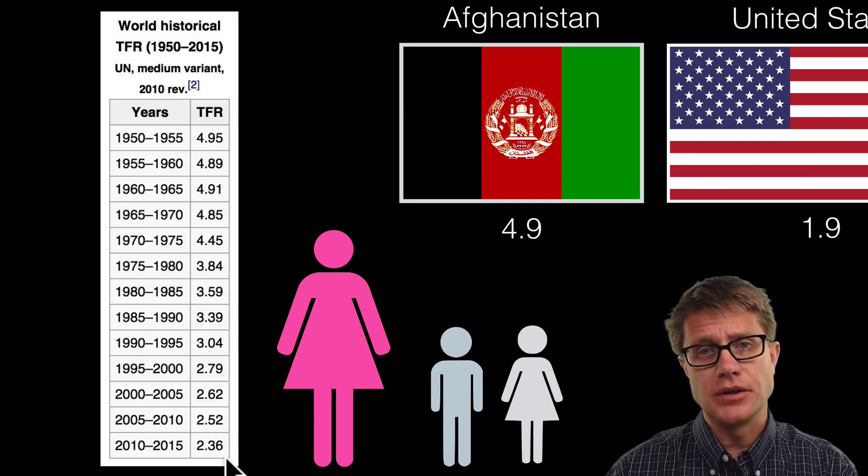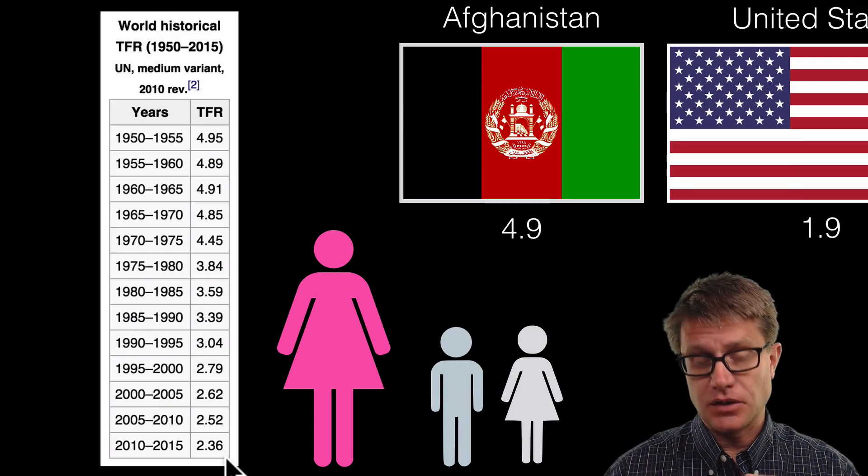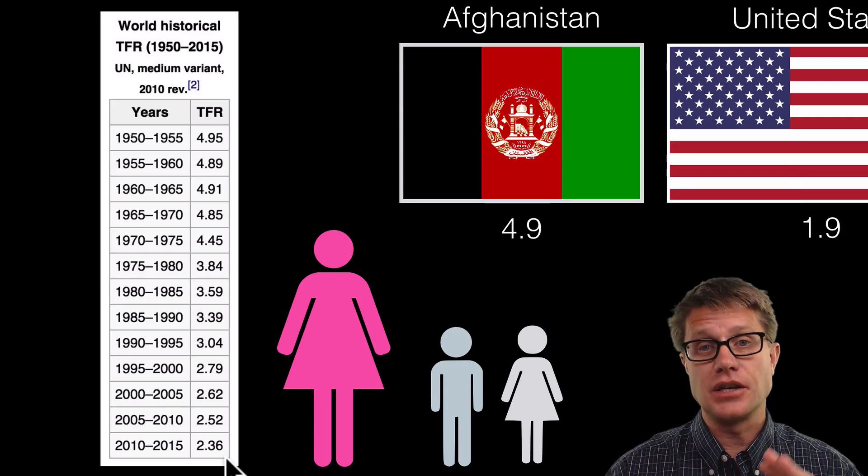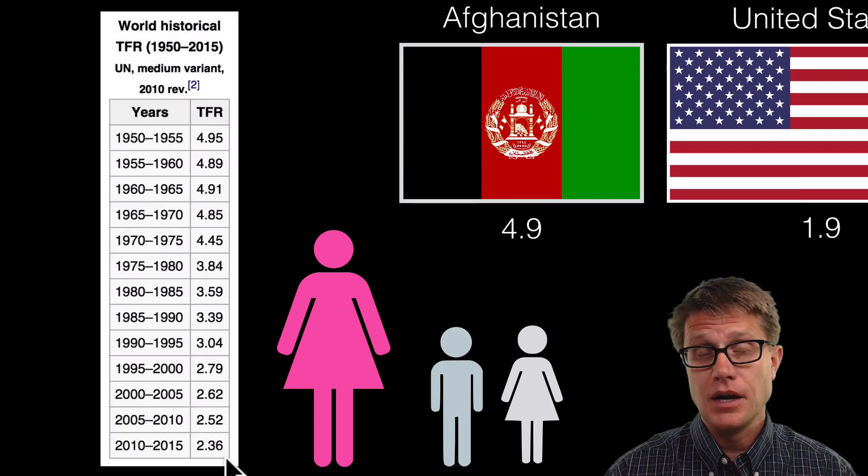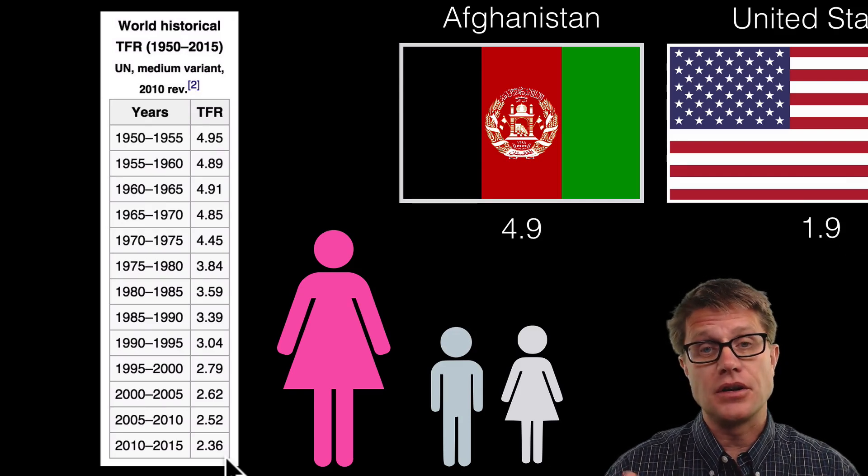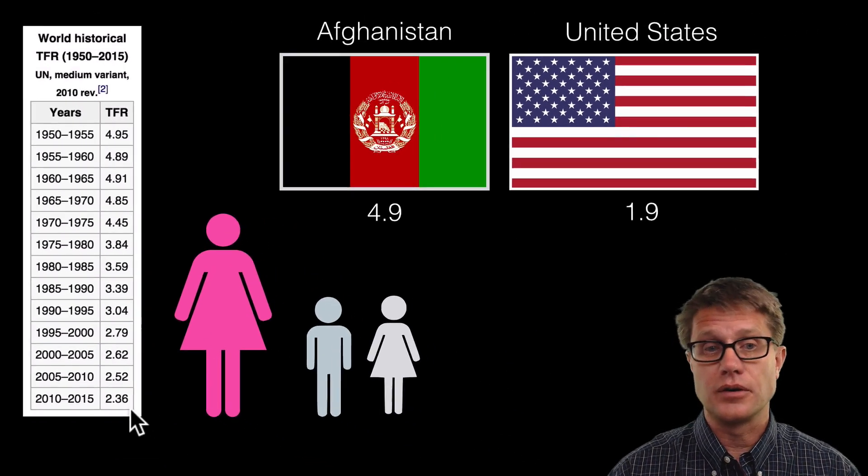Well in developed countries women are going to have access to birth control. They are also going to have access to education and employment. Therefore they do not have to get married and start having kids right away for stability. So they are going to have less kids over time.